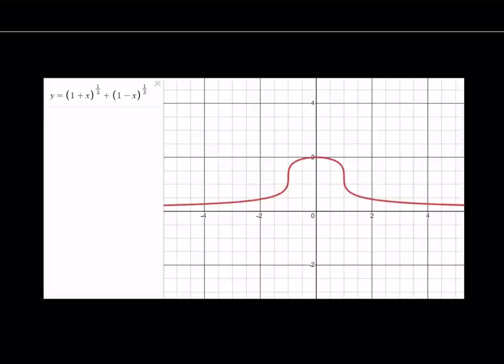Now, you see kind of like an interesting shaped graph here because of the cube roots, but notice that this is symmetrical. What is that supposed to mean? It means that if you replace X with negative X, the function is unchanged, which means that this is actually an even function.